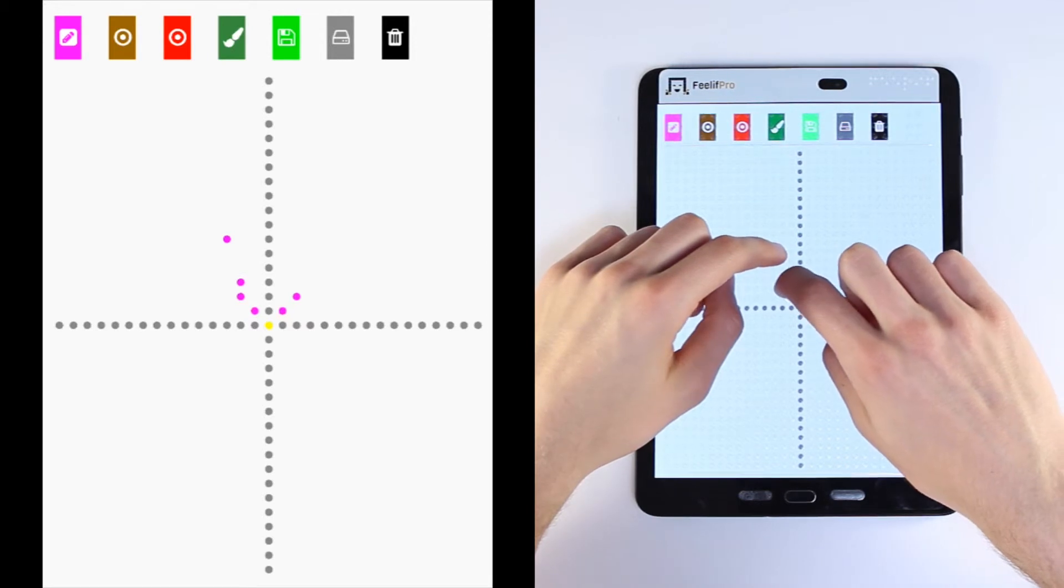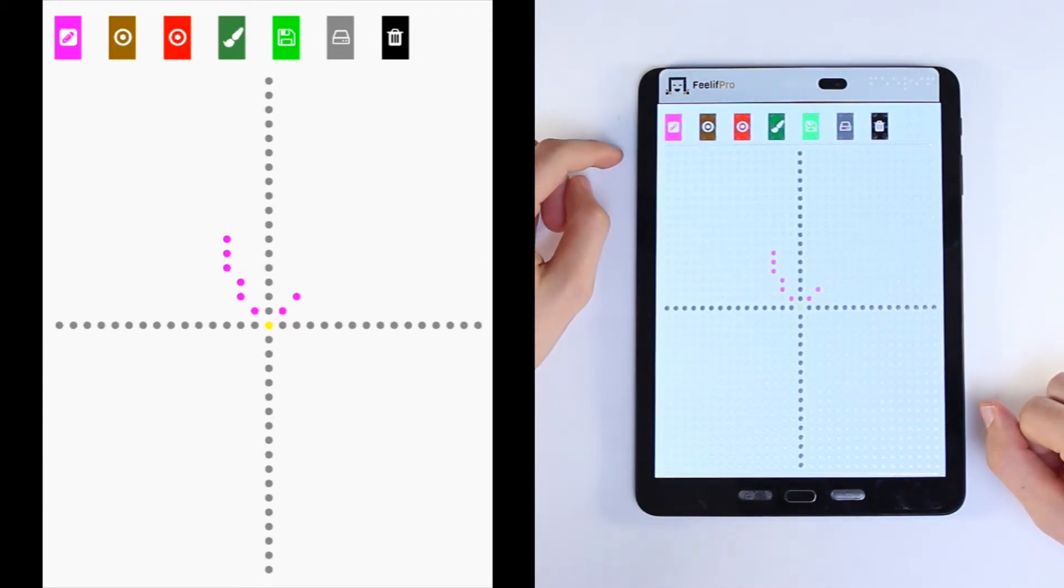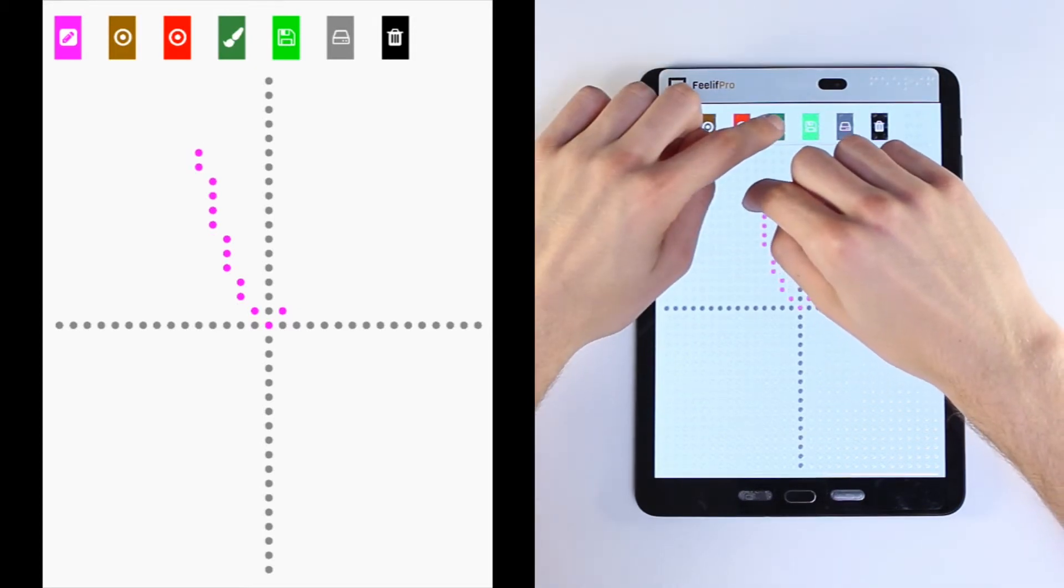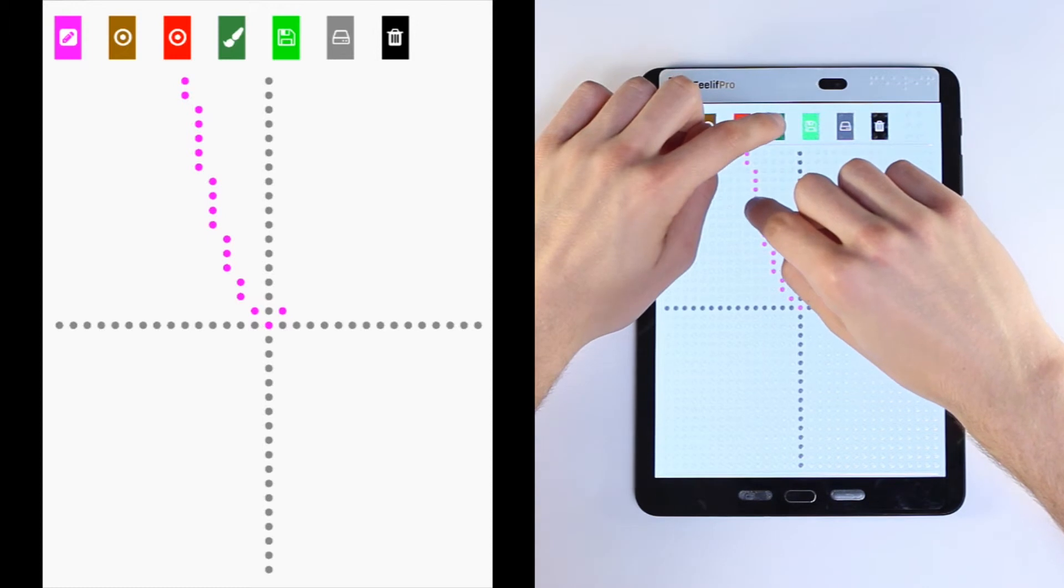Now the user can use this point as a reference. Hold it with one finger and with another finger trace the function. The second way to trace the function is by holding the fourth button with one hand and tracing the function with your other hand.